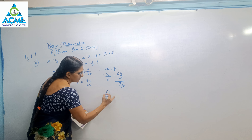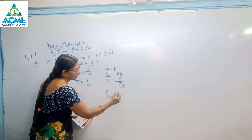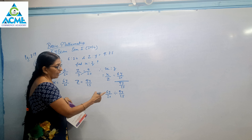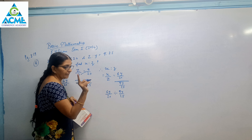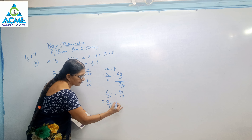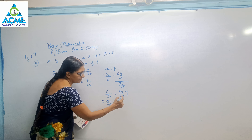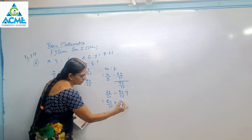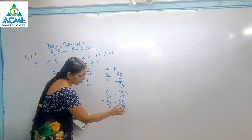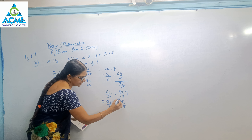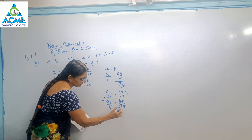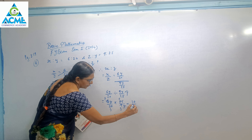This line means division. So we have 6y upon 20, divided by 9y upon 25. Division becomes multiplication by the reciprocal — so 25 moves from denominator to numerator. Now y and y cancel. Then simplify: 25 divided by 5 is 5, 20 divided by 5 is 4, 6 divided by 3 is 2, 9 divided by 3 is 3. So the answer is 10 upon 12.